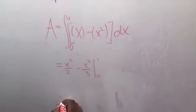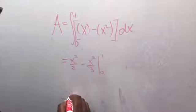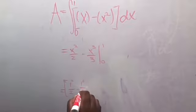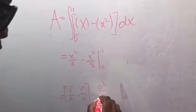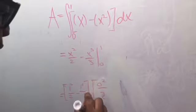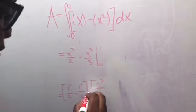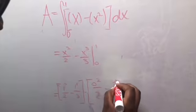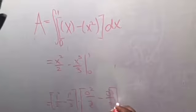When evaluating antiderivatives, you subtract the upper limit minus the lower limit. So 1 squared over 2 subtracted by 1 to the third over 3, also subtracted by 0 squared over 2 minus 0 to the third over 3. So 1 squared over 2 will equal 1 half minus 1 third minus 0.